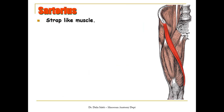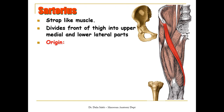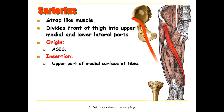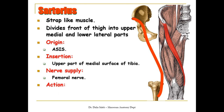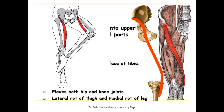The sartorius muscle is a strap-like muscle that divides the front of the thigh into upper medial and lower lateral parts. It takes origin from the anterior superior iliac spine and inserts into the upper part of the medial surface of the tibia. It is supplied by branches from the femoral nerve. Since it crosses both the hip joint and the knee joint, it acts on both: it flexes both the hip and knee joints, and also laterally rotates the thigh and medially rotates the leg.